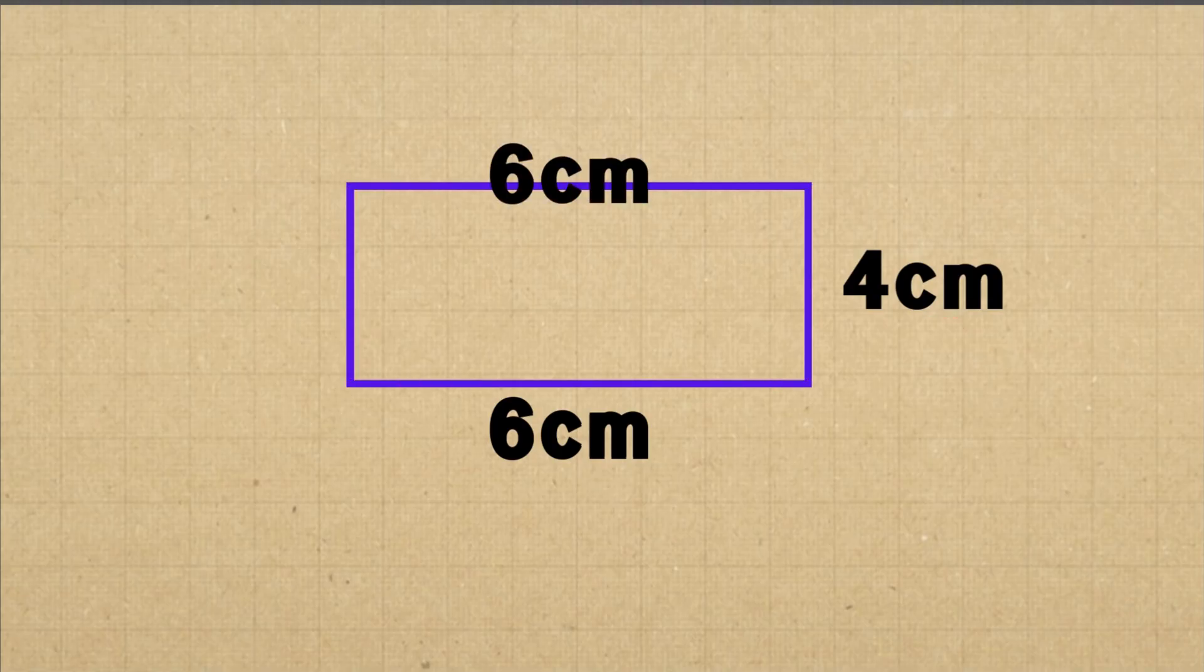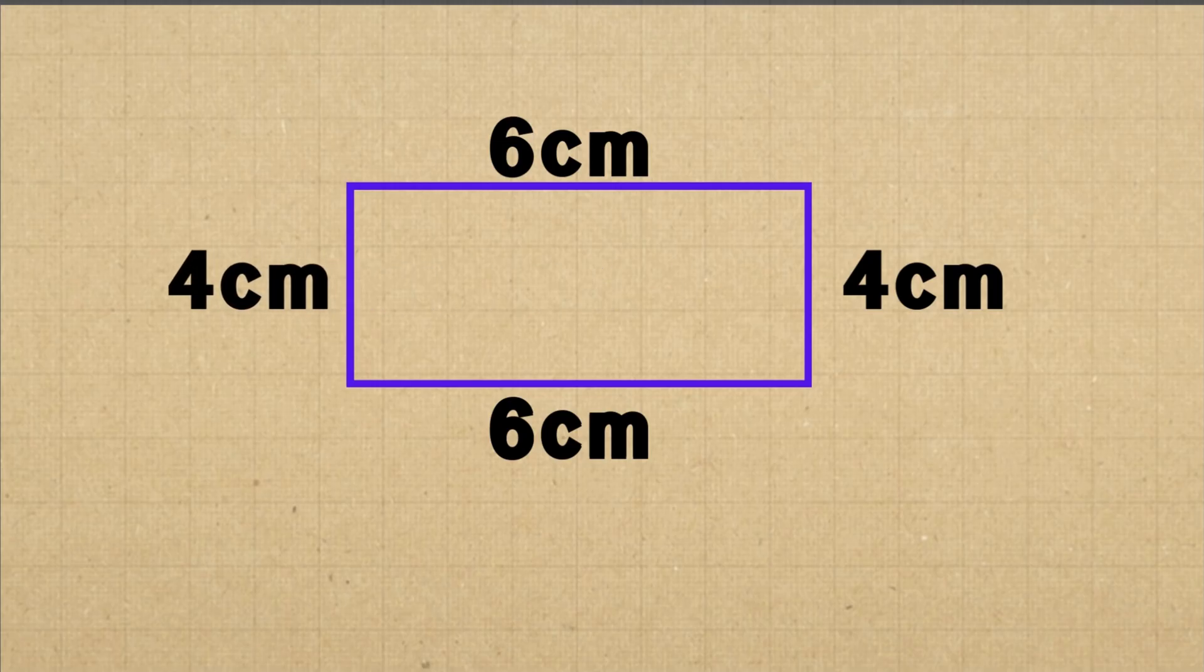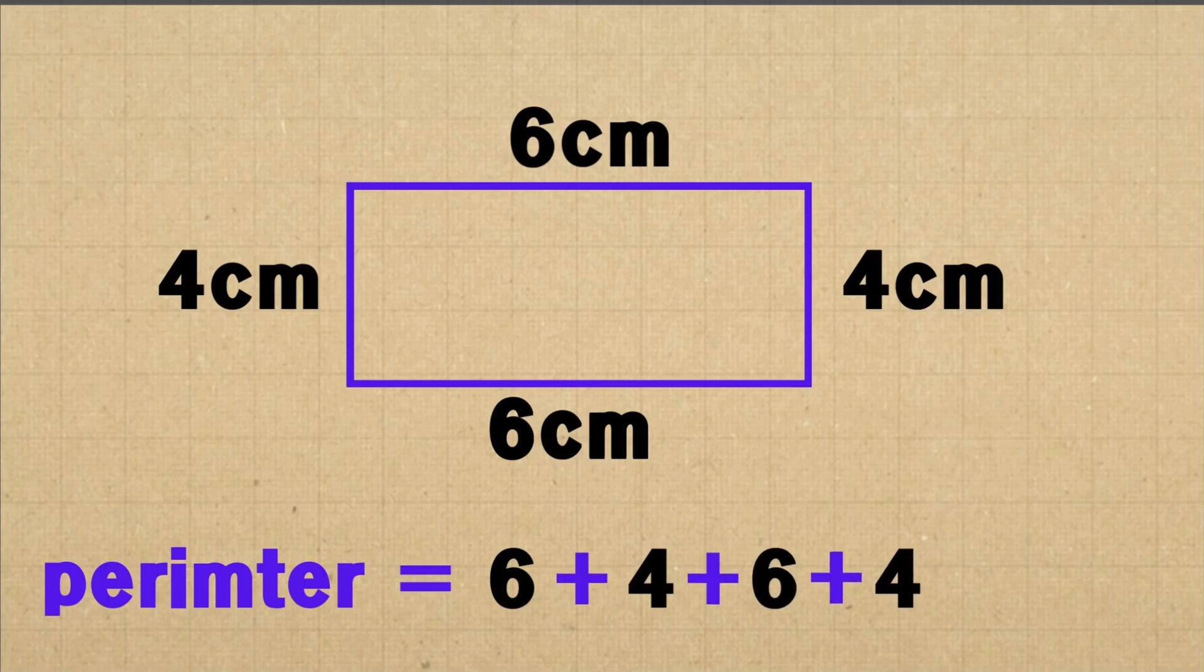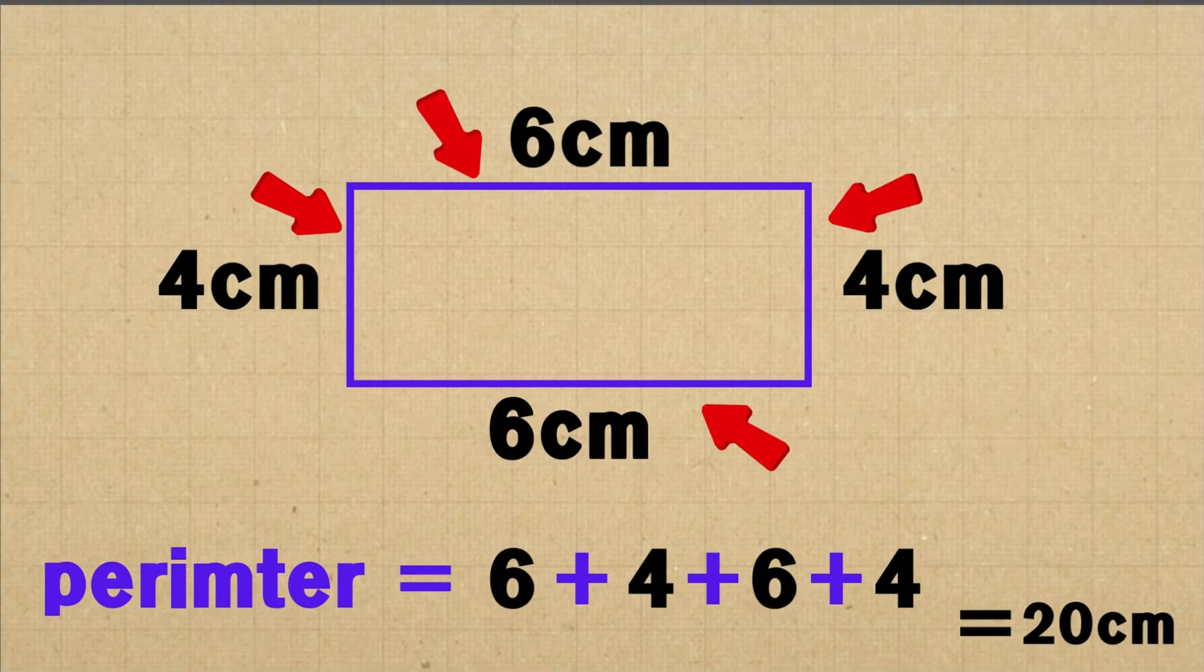Two sides are 6 cm each. Two sides are 4 cm each. So to find the perimeter, we add all 4 sides together. So p equals 6 plus 4 plus 6 plus 4 equals 20 cm. So the perimeter of this rectangle is 20 cm.